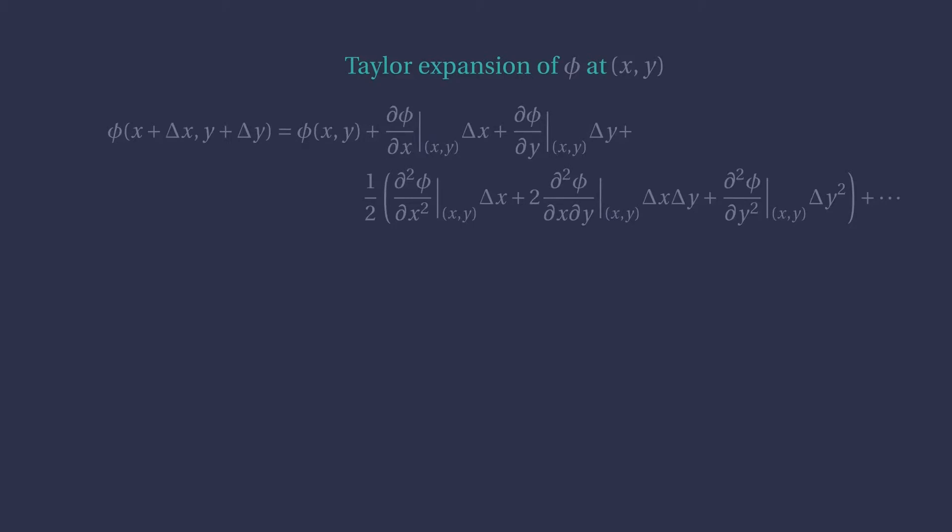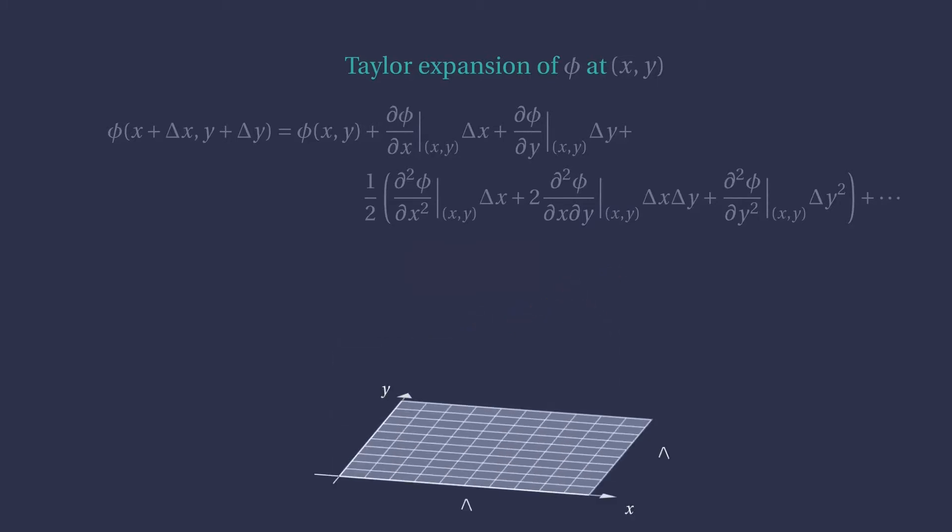Before looking at the formulas for the finite differences in two dimensions, let's set up our notation properly. In one dimension, we divided the domain into a grid of n points, delta x apart from each other. Now, we assume that the domain is divided into an n by m grid with points separated by delta x horizontally and delta y vertically.